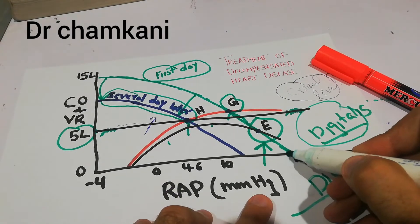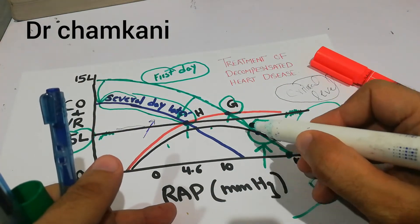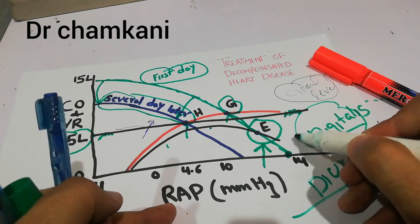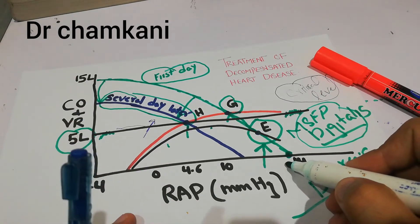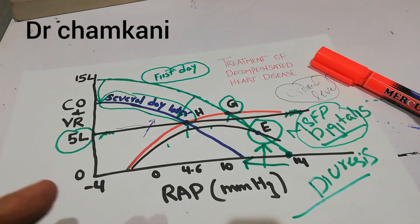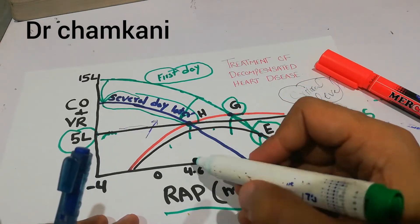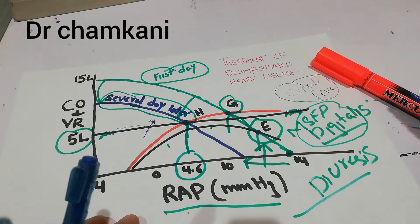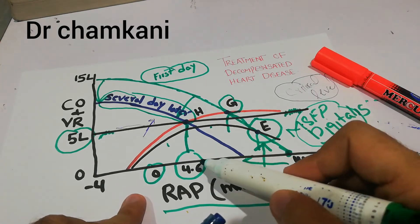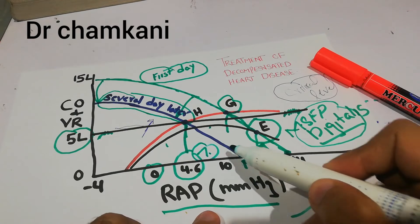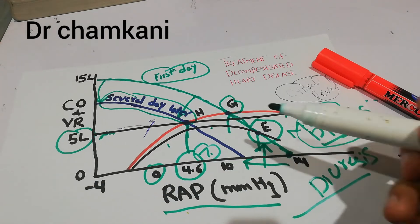When the venous return has come down, the mean systemic filling pressure — the pressure forcing blood towards the heart, represented by the point where the venous return curve meets the x-axis — also decreases and starts going towards its normal level. The right atrial pressure, which initially was elevated, has finally come down. In a normal heart, right atrial pressure should be around zero and mean systemic filling pressure should be around 7. The x-axis at any point shows the right atrial pressure in the right atrium.